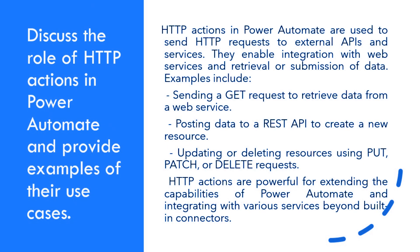Discuss the role of HTTP actions in Power Automate and provide examples of their use cases. HTTP actions in Power Automate are used to send HTTP requests to external APIs and services. They enable integration with web services and retrieval or submission of data. Examples include: sending a GET request to retrieve data from a web service; posting data to a REST API to create a new resource; and updating or deleting resources using PUT, PATCH, or DELETE requests. HTTP actions are powerful for extending the capabilities of Power Automate and integrating with various services beyond built-in connectors.